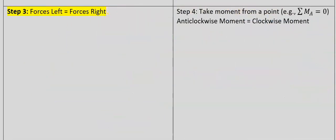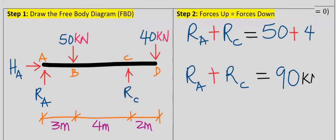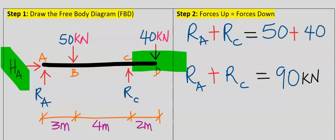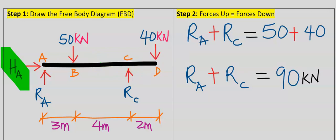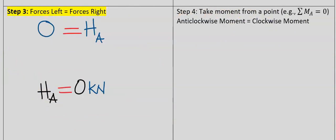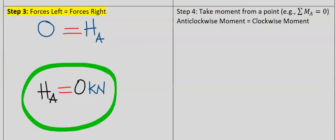Step number three: forces to the left is equal to forces to the right. From the free body diagram, the horizontal force at point A is pointing towards the right, and the force pointing towards the left does not exist — hence it is zero. The horizontal force at point A is zero, and we have just obtained one of the answers.